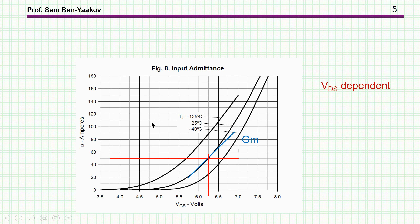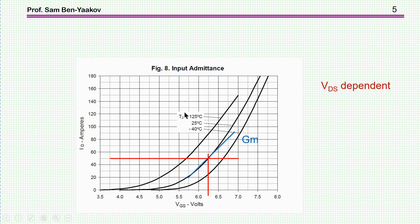Another important piece of information is the GM curve of the transistor — the relationship between drain current and V_GS, the gate-to-source voltage. These curves are for different temperatures. At 25°C, to get 50 amps for this device, you need about 6.25 V. These curves are also voltage dependent, but let's focus on the general behavior, which is important for the discussion later.